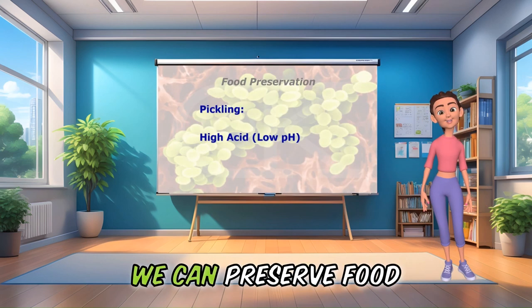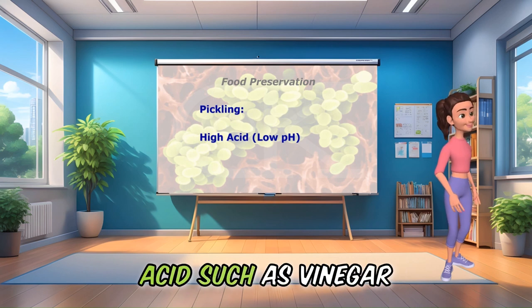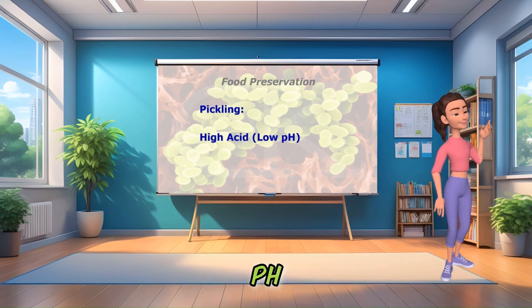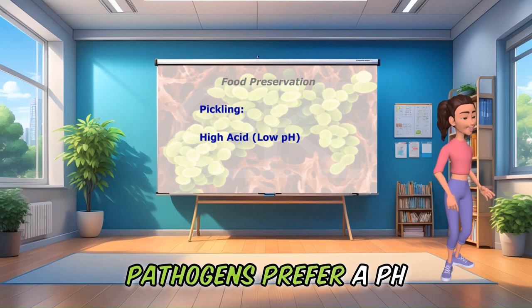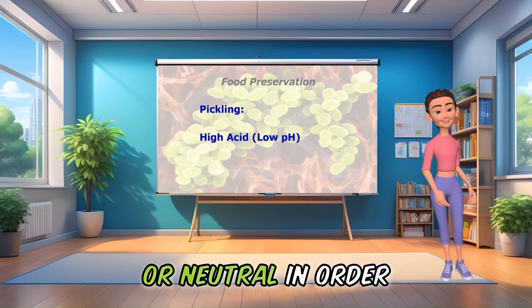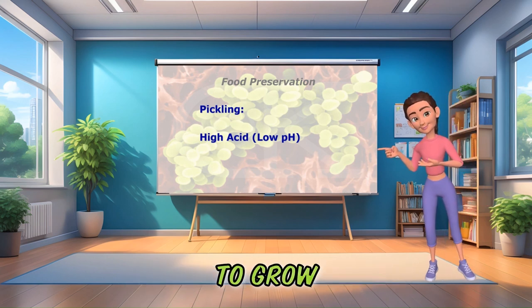We can preserve food by pickling, using an acid such as vinegar, which has a low pH. Pathogens prefer a pH value of around 7, or neutral, in order to grow.